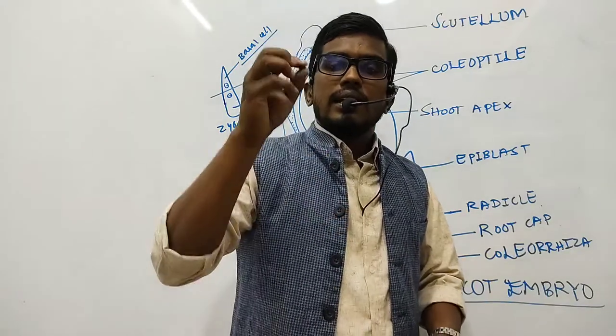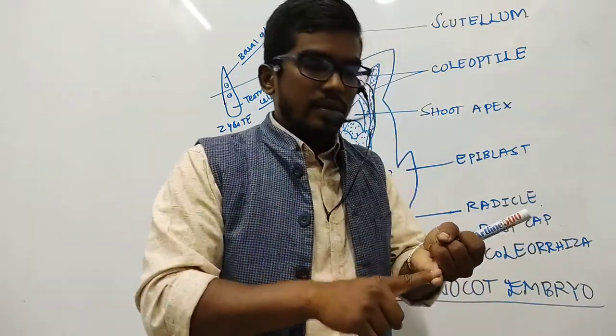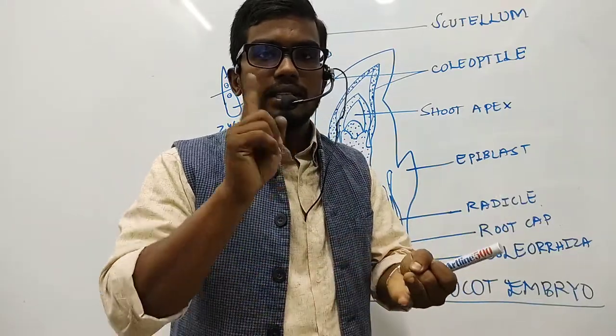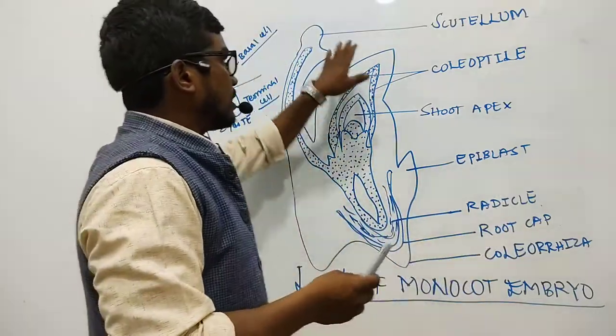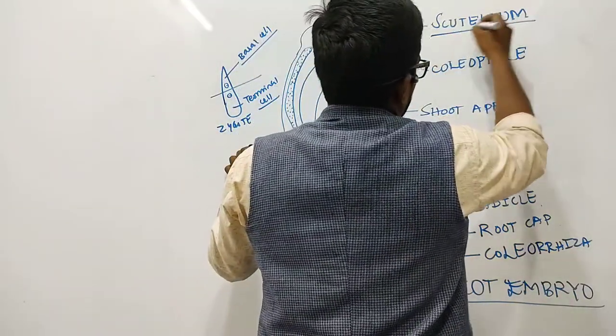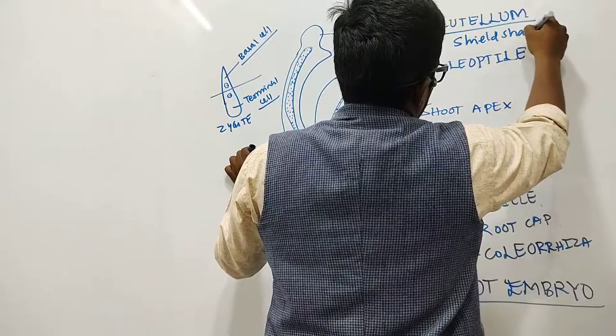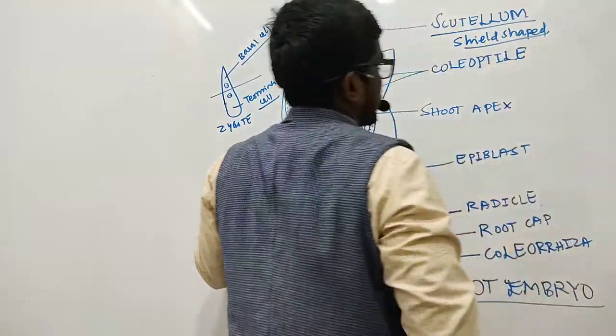As I said, the structure here also is consisting of firstly the embryonal axis and single cotyledon. The single cotyledon here is referred to as the scutellum. So the scutellum is in fact shield-shaped.